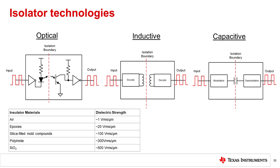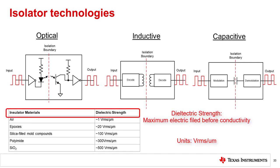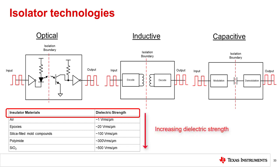Each technology uses a different insulator material with different dielectric strengths. Dielectric strength is a measurement used to describe the maximum applied electric field that a material can withstand without undergoing electrical breakdown and becoming electrically conductive. This is measured in volts RMS per micrometer. The higher the value of the dielectric strength, the more robust the isolator.